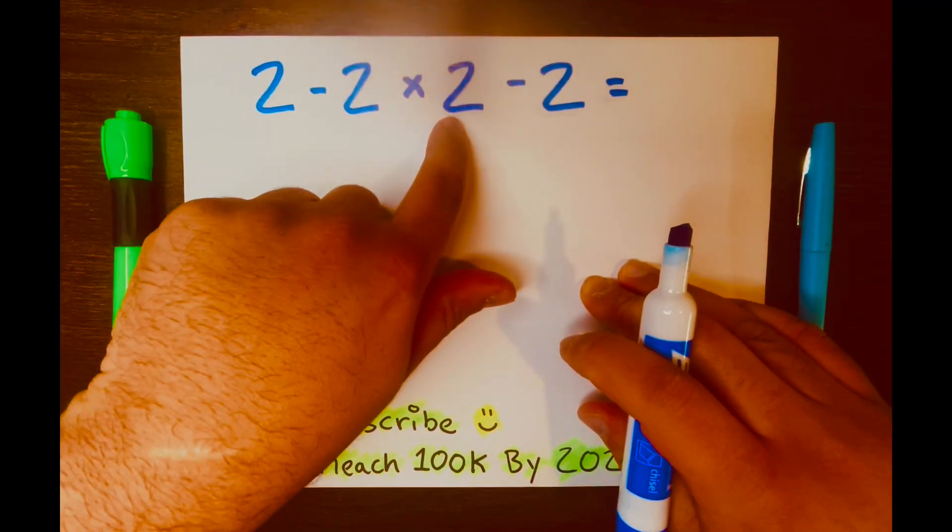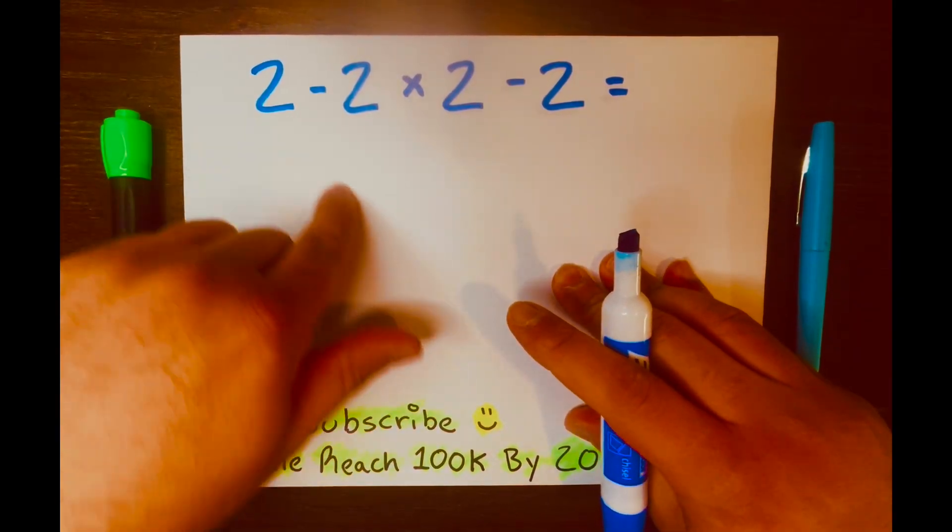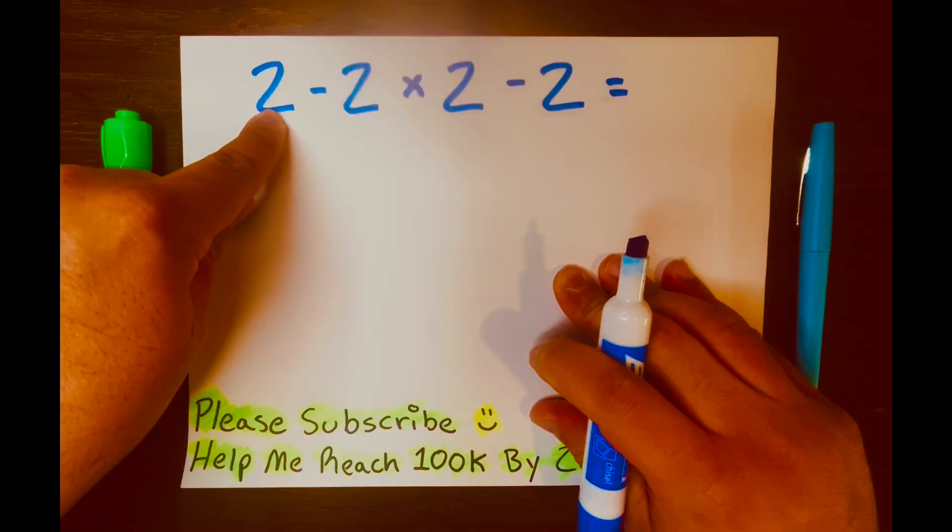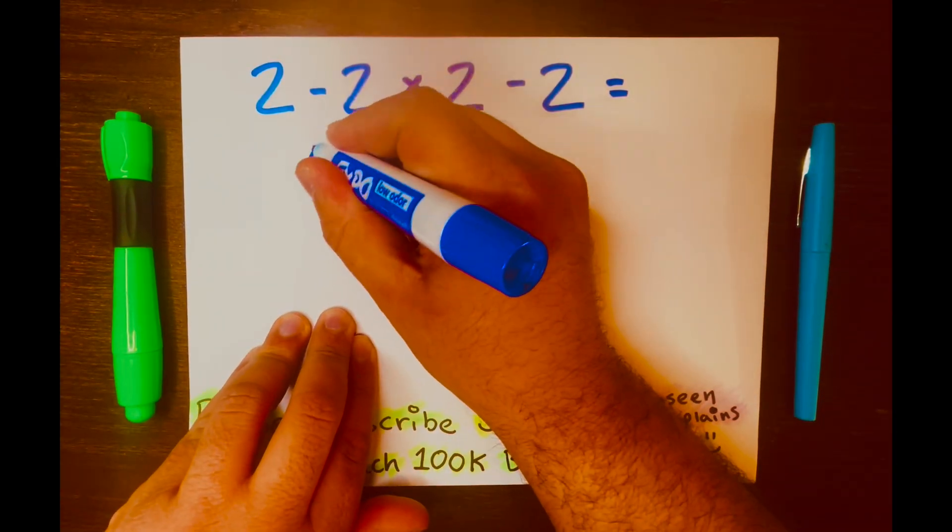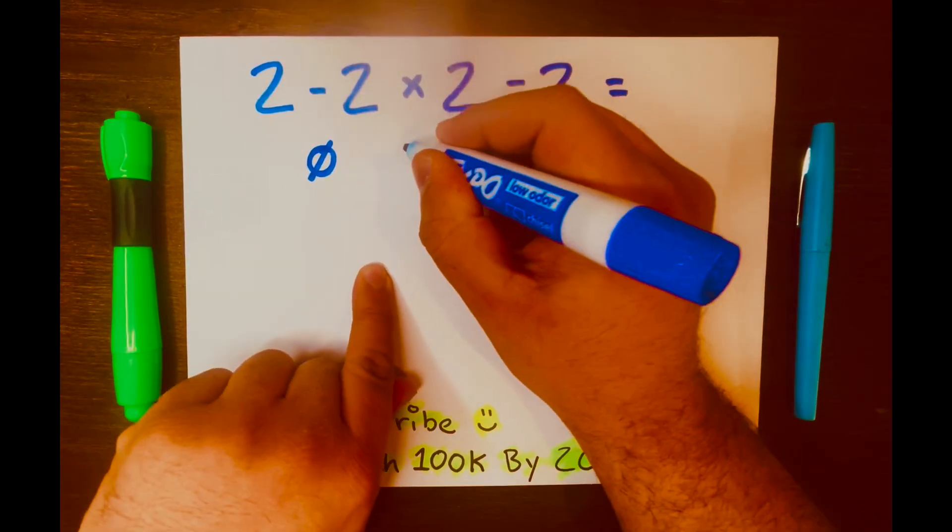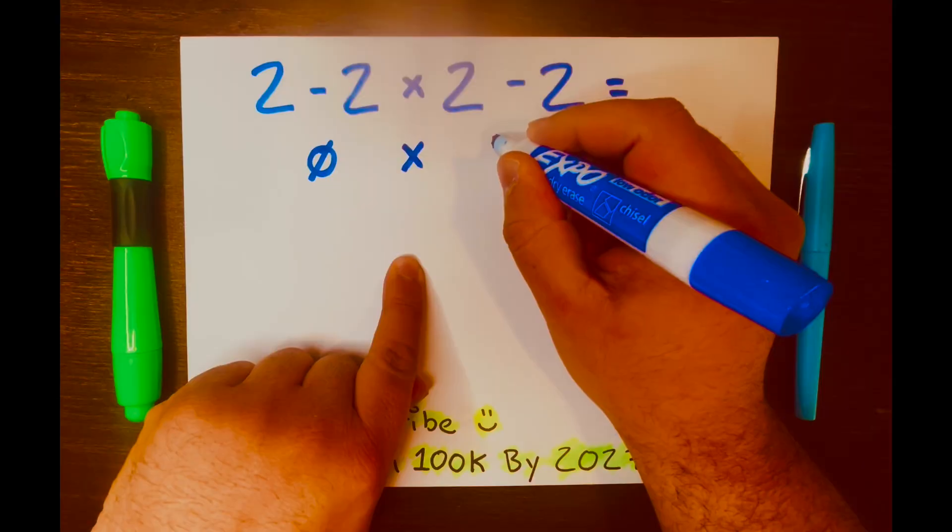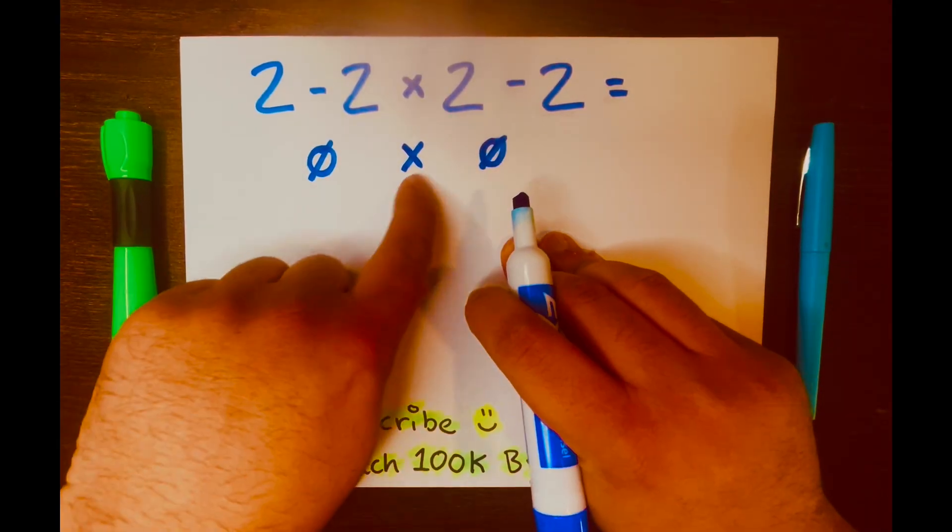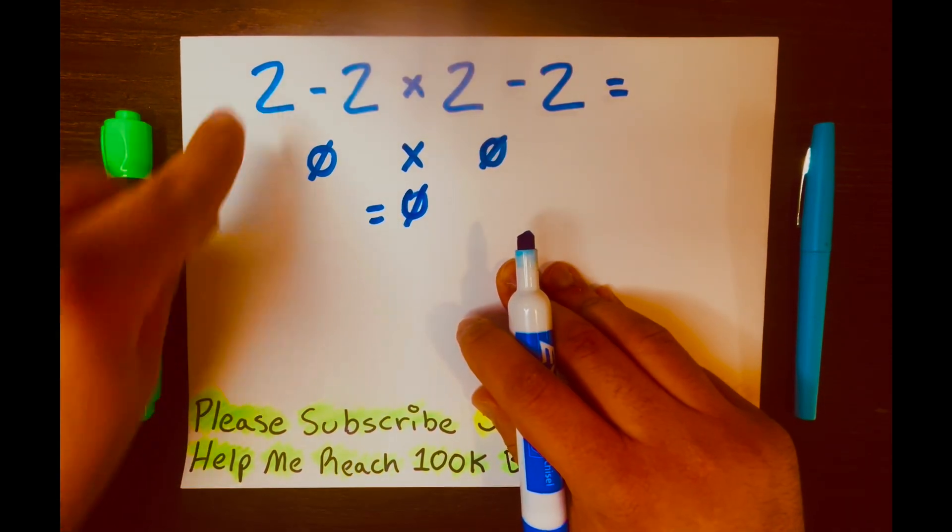2 minus 2 times 2 minus 2. And some people will start solving this math problem like this. They'll start with 2 minus 2, which equals 0, and then times 2 minus 2, that equals 0. And 0 times 0, 0. And some people will start like this.